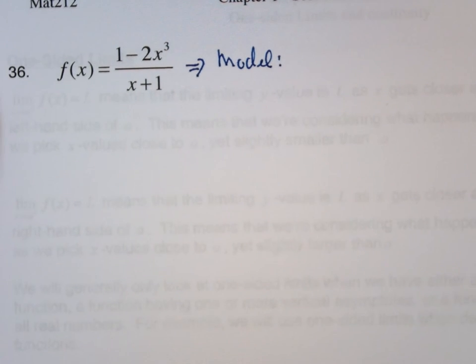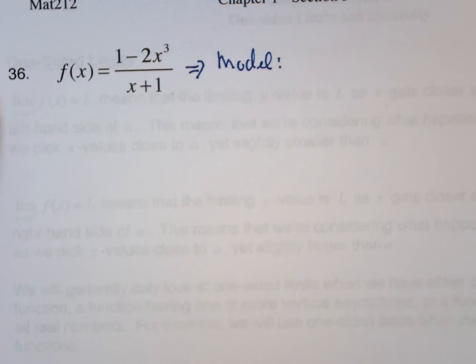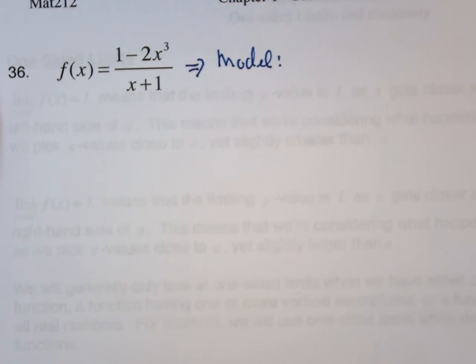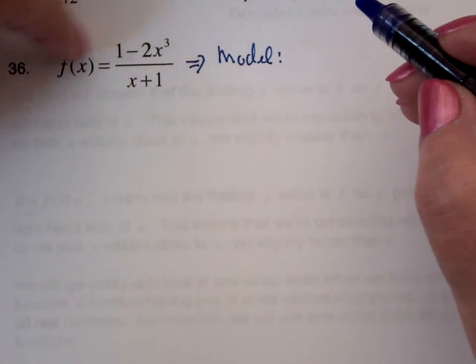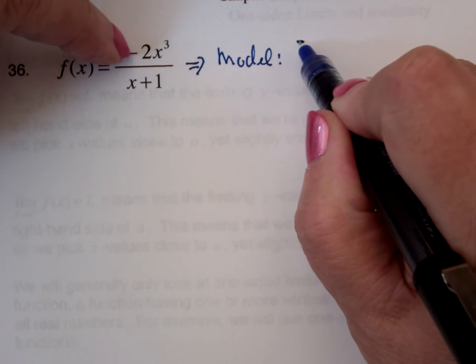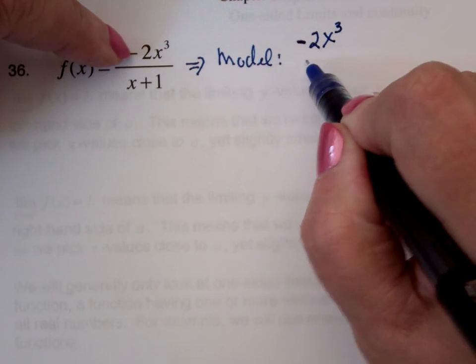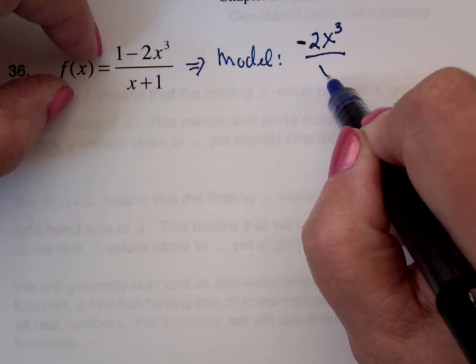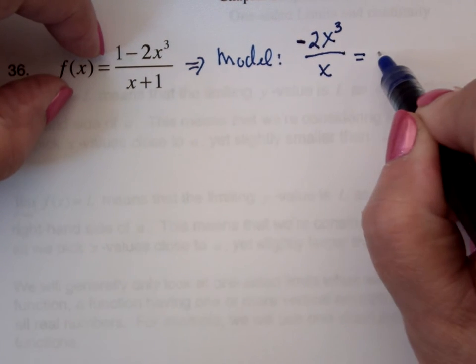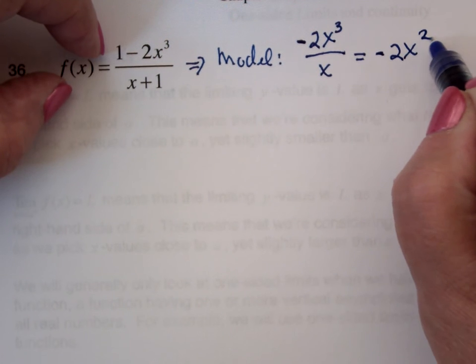The model is what's in control of everything. It's in control of the world. And if I look at the model, the model is the quotient of the two highest powers, so the terms with the highest powers. So it's negative 2x cubed divided by x, and so it's going to be negative 2x squared.